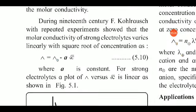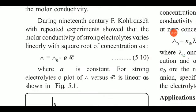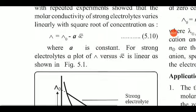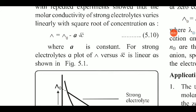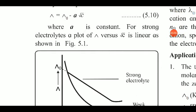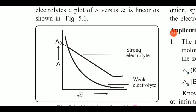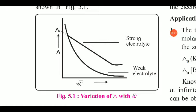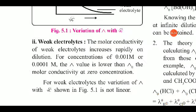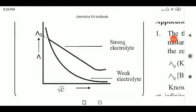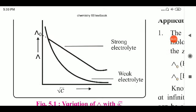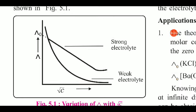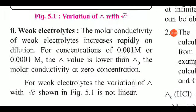The scientist Kohlrausch, during the 19th century, showed through repeated experiments that the molar conductivity for strong electrolytes varies linearly with the square root of concentration, as given by equation 5.10, where A is a constant for strong electrolytes. The plot shows a sharp linear curve for strong electrolytes, while for weak electrolytes an exponential curve is observed.